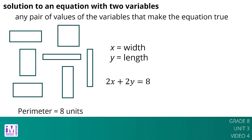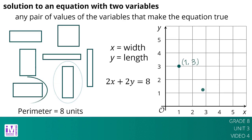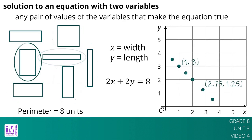We can think of the pairs of numbers that are solutions of an equation as points on the coordinate plane. The set of solutions to 2x plus 2y equals 8 create a line. Every point on the line with positive x and y values represents a rectangle whose perimeter is 8 units. All points not on the line are not solutions to 2x plus 2y equals 8.